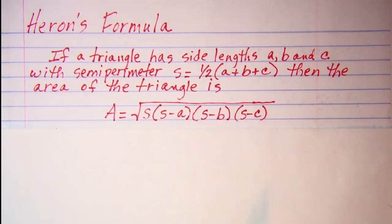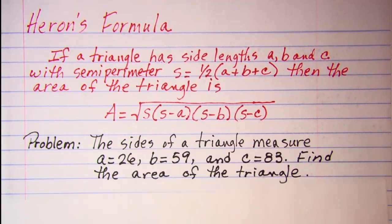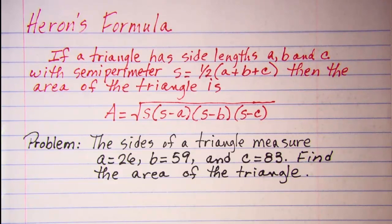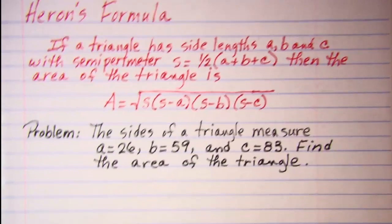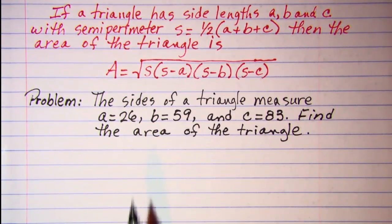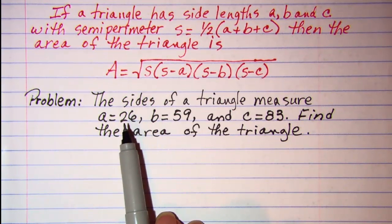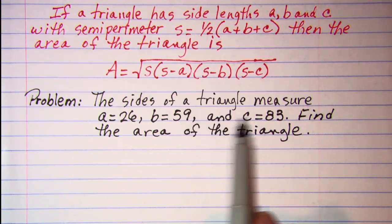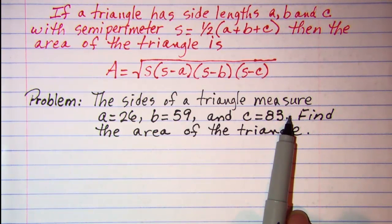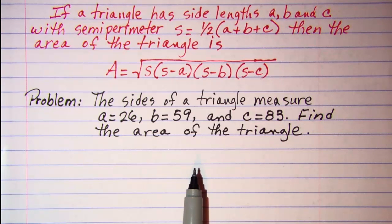Let's use this formula to find the area of a triangle. For example, the sides of the triangle measure 26, 59, and 83. We're asked to find the area.